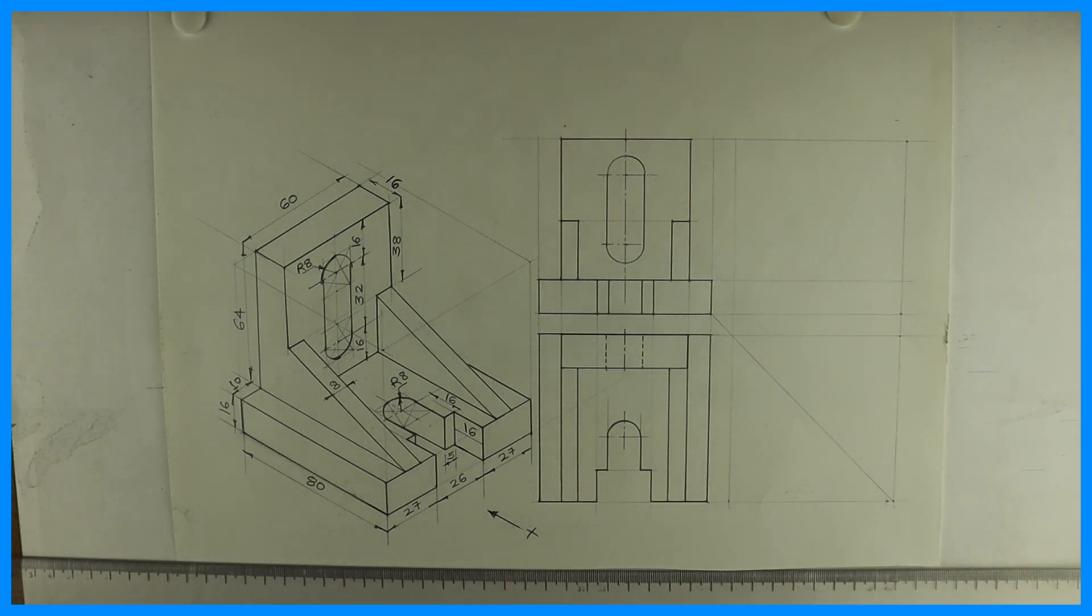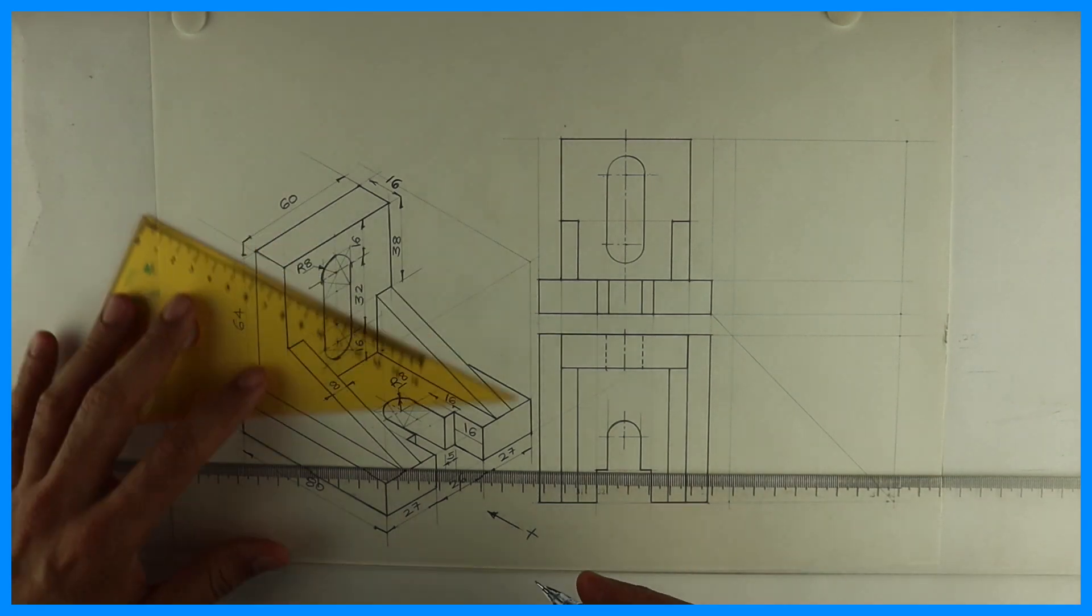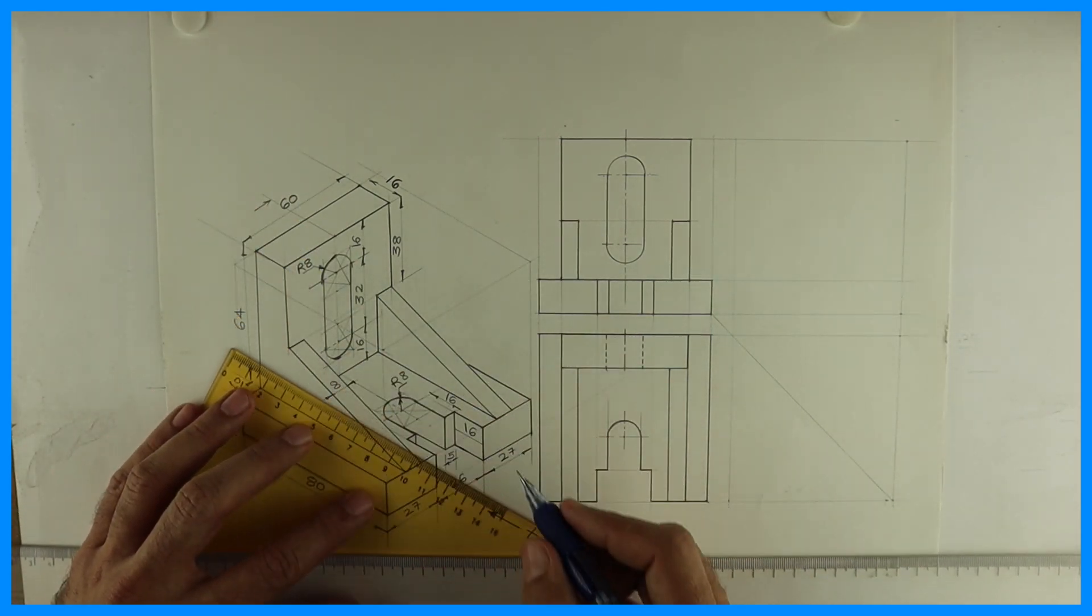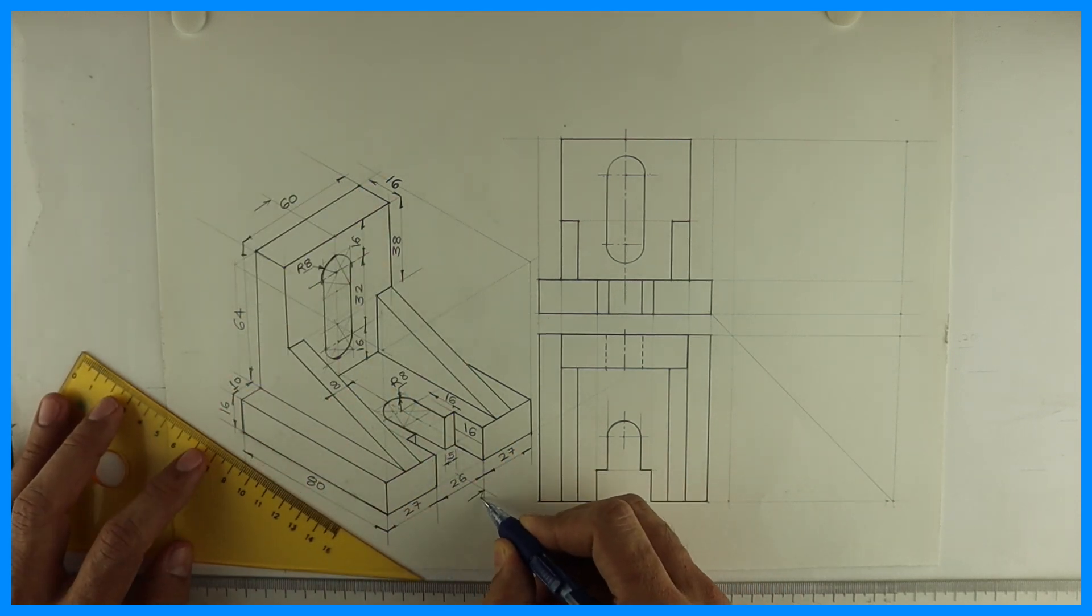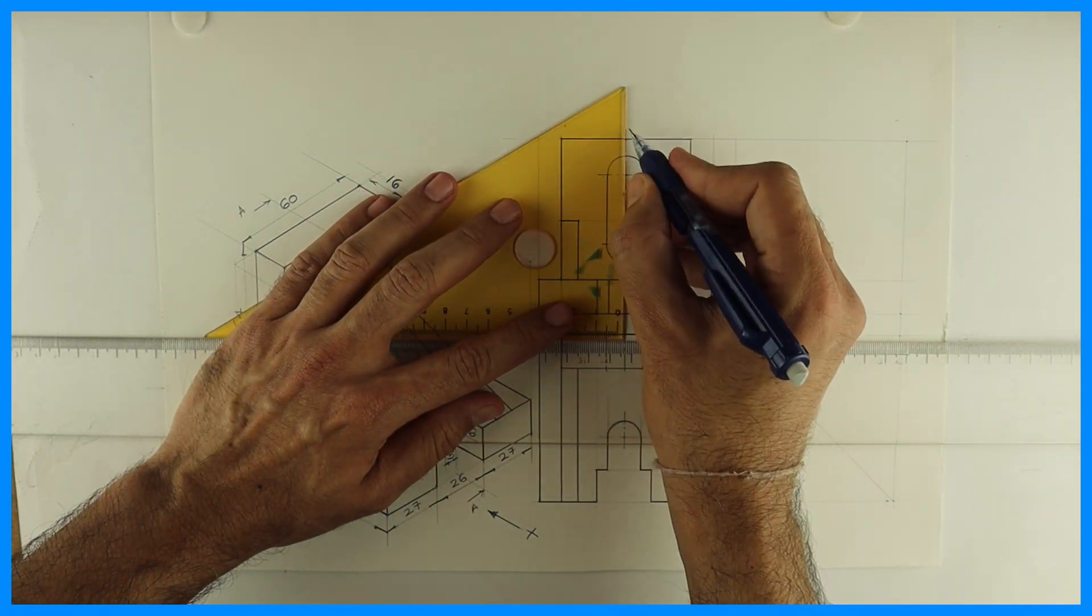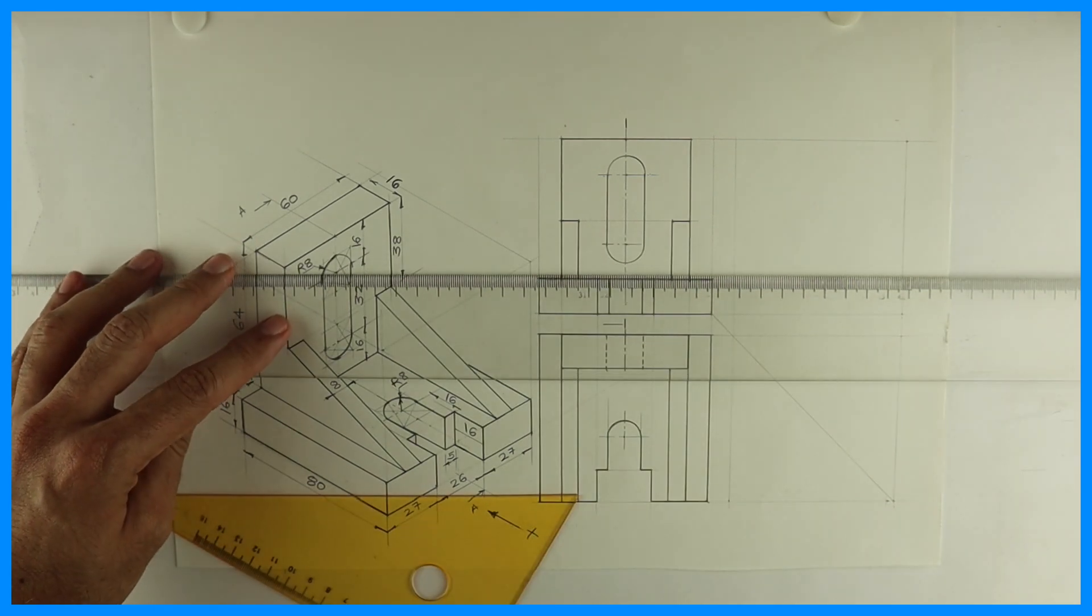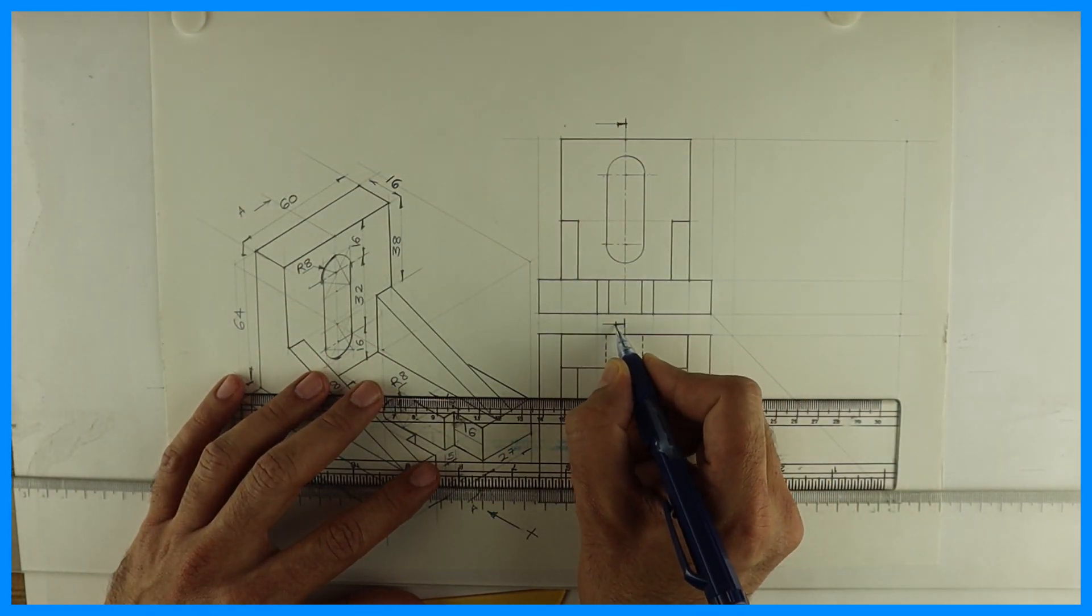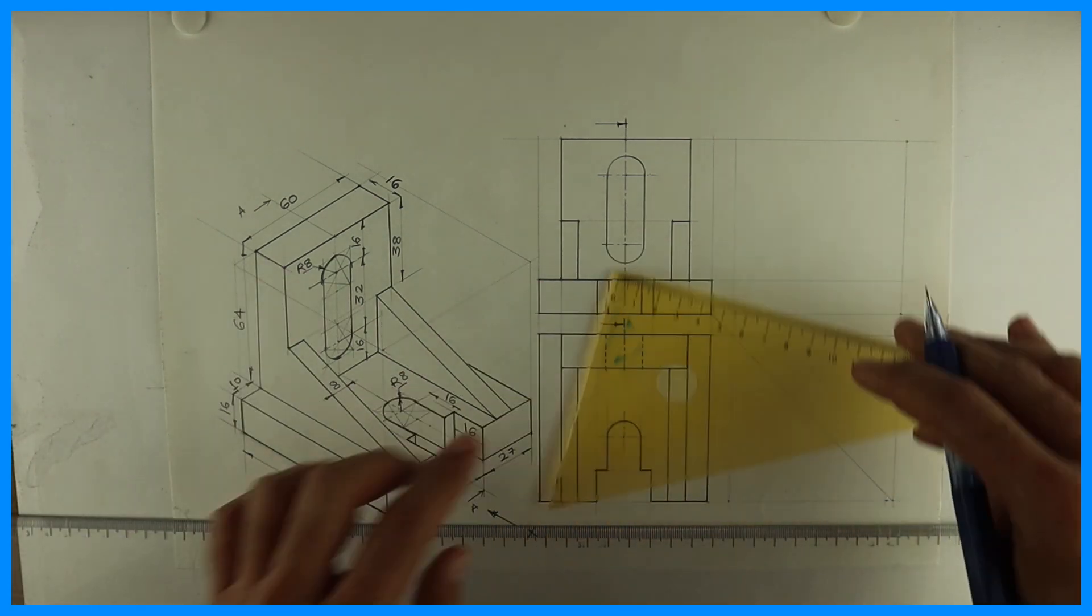Now we need to draw side view, but we have to draw sectional side view. So what we will do, we will draw light side view. That means we won't be drawing anything dark. See, cutting plane is from here. So we are doing sectional side view along AA. So I need to draw cutting plane line in front view. I will mark AA.